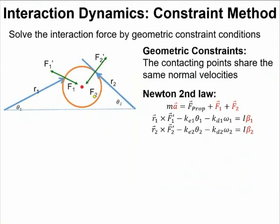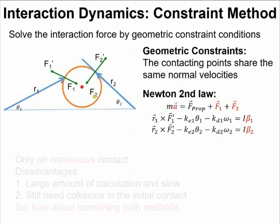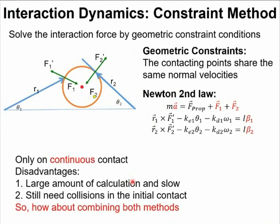So to deal with this problem, I try to solve the continuous dynamics by solving the system with geometry constraint and using Newton's second law. I use the velocity constraint that the contact points have the same normal velocity. By using these equations, I can directly solve the interaction forces. This method is good and accurate, but it only works on the continuous contacts, and I still need to add some collisions in the beginning. Maybe it is a good idea to combine both methods.